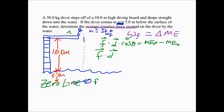Rewriting, the final mechanical energy equals zero. Now let's look at what kind of energy they had at the beginning. They are at some height above the zero line, and the diver steps off the diving board, so the initial velocity is zero — meaning no kinetic energy at the beginning. All they have up at the top is gravitational potential energy. They're not touching a spring, so no elastic potential energy.